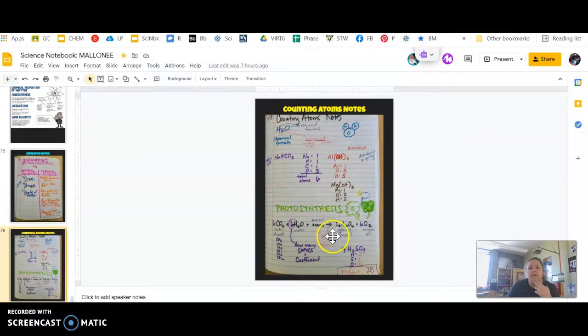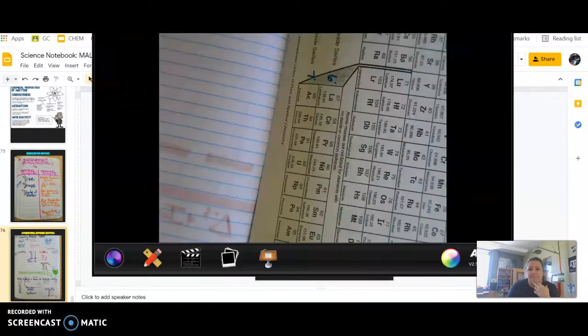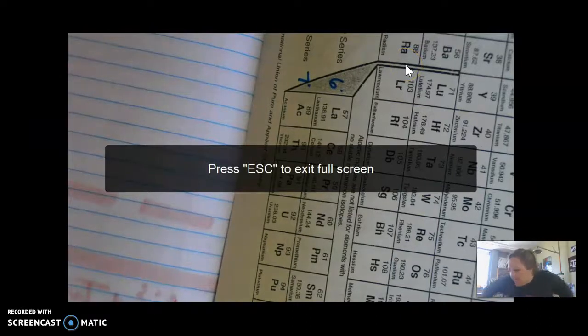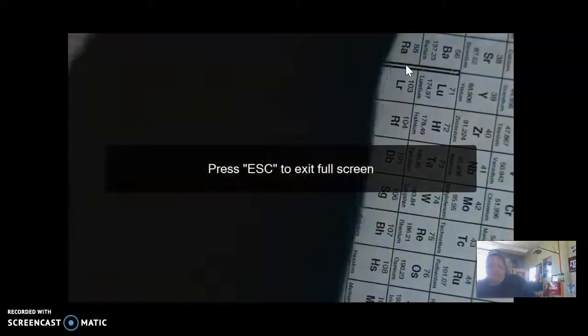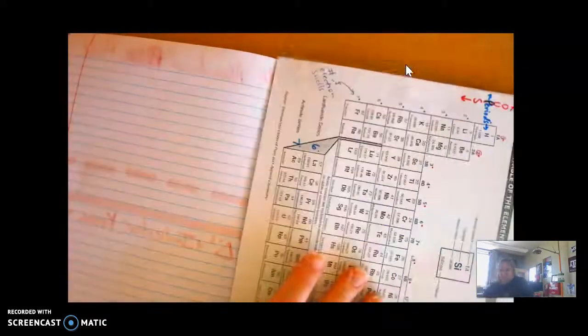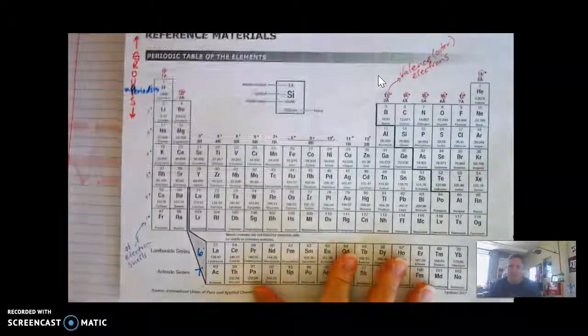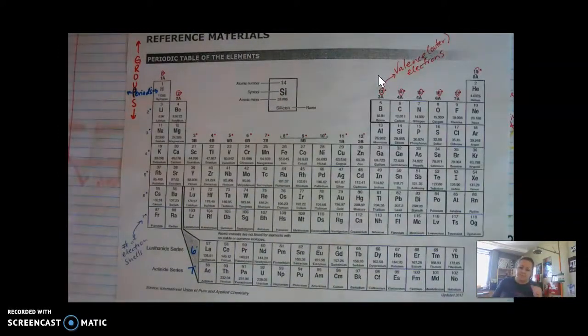Now you should still have your periodic table. You might want to double check that you've got it, and yours should be colored with metals, non-metals, and metalloids. I have six of them so I don't color all six because there's only so much time in the day.